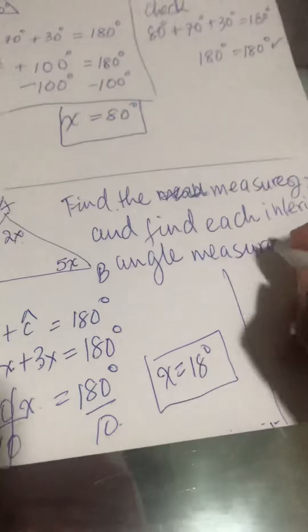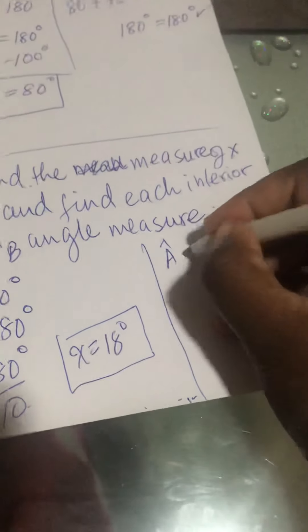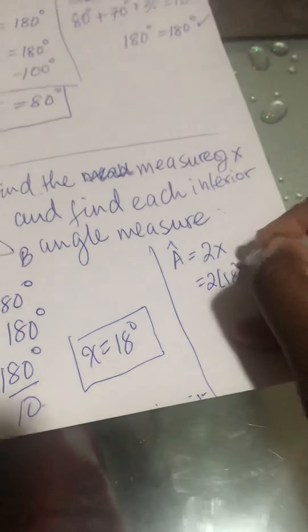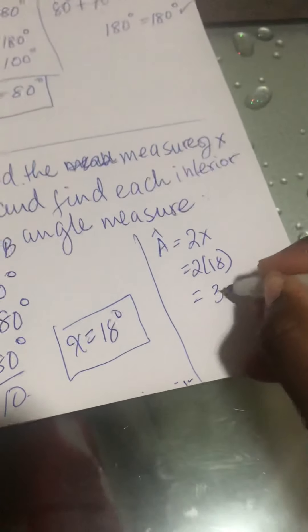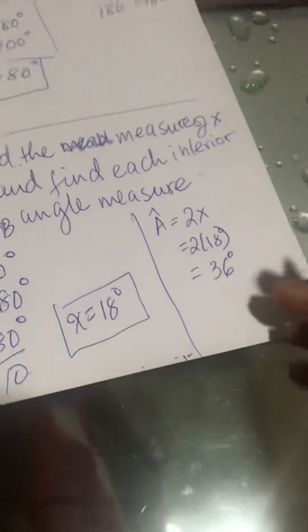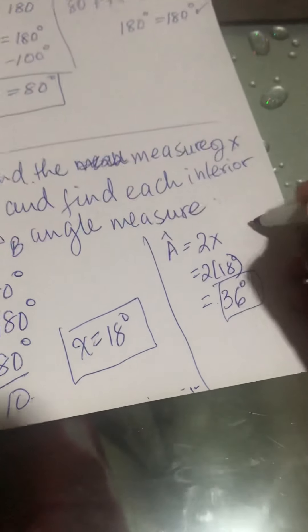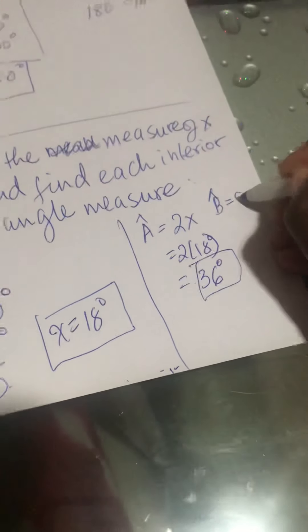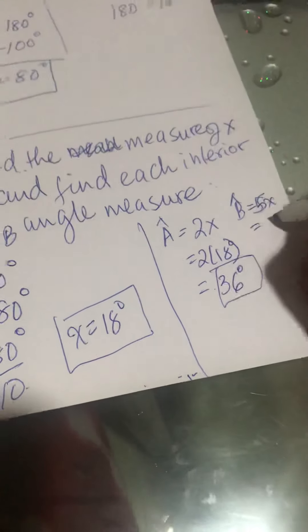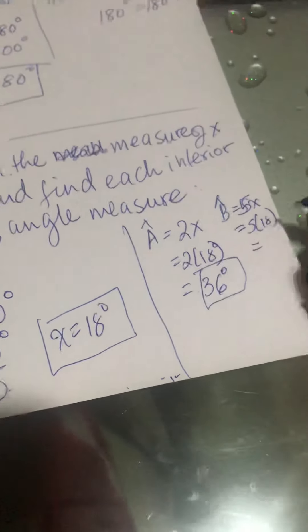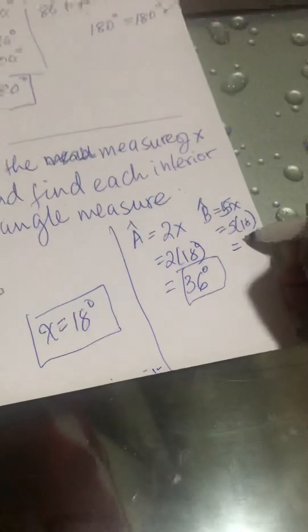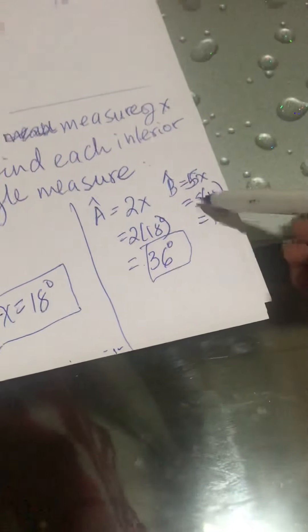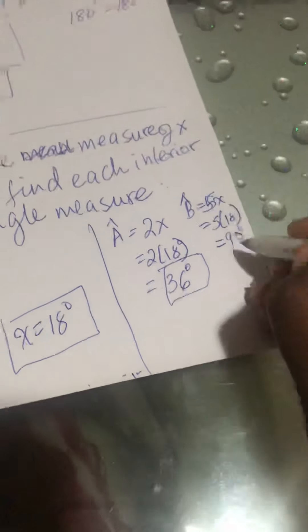Then find the measure of each angle. Angle A is 2x which is 2 times 18, which is 36 degrees. Okay, this is my answer for A. My answer for B, angle B is 5x, 5 times 18, which is 90 degrees. Okay, according to the question.